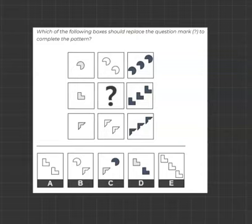Which of the following boxes should replace the question mark to complete the pattern? So looking at these nine figures, I'm going to start off with the columns and then move on to the rows.